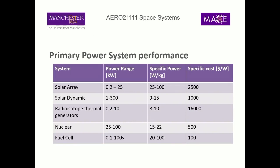A student asks: if RTGs are the most expensive with lower performance, why would we use them? Think about when we go away from the sun — there's no energy coming to our satellites from solar, so we have to basically bring the energy with us. The only source that supplies energy continuously in deep space is radioactive decay. That's the only way for deep space missions or missions very far from the sun to generate power effectively.